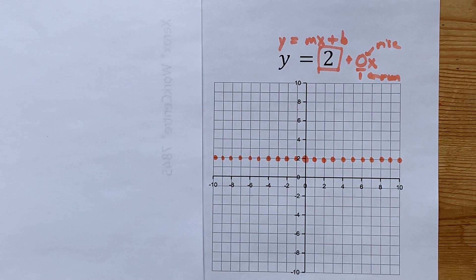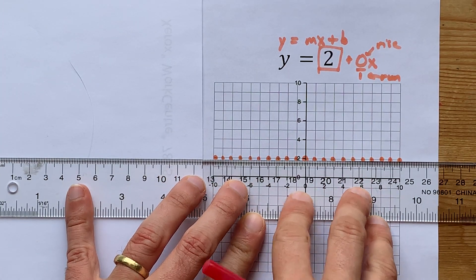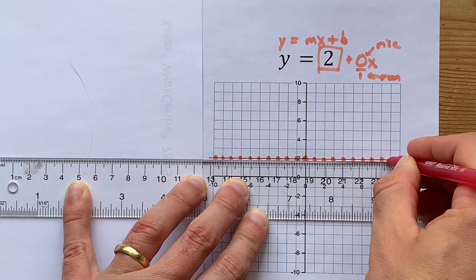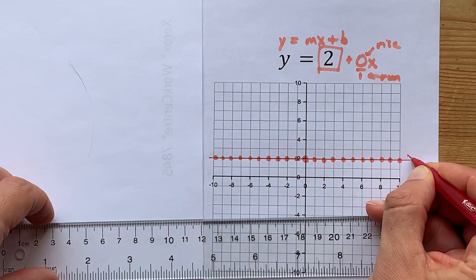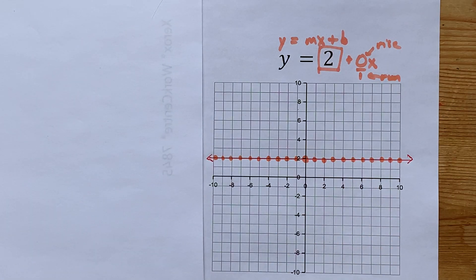Okay, this is setting the record for how many dots I put on a graph. Because you're being asked to draw a graph or graph the line, I want you to connect your points with a ruler, put arrows on both sides to show that it goes infinitely.